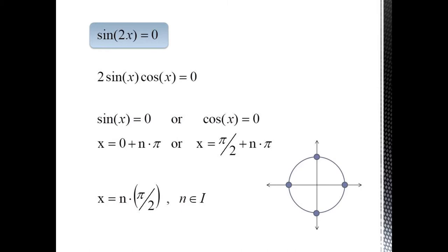How about sine 2x equals 0? Well, one way to solve this would be to use our double angle identity, which gives us 2 sine x cosine x equals 0. We can break this apart as sine x equals 0 or cosine x equals 0. This gives us the four points of intersection of the unit circle with the x and the y-axis. Because of the symmetry, we can combine these into the single solution x equals n times pi over 2.